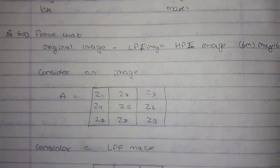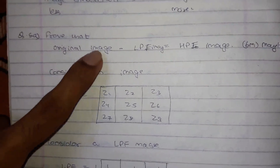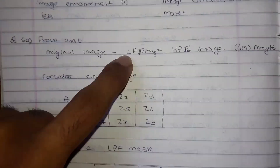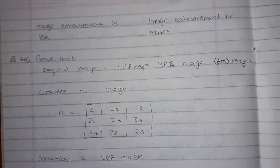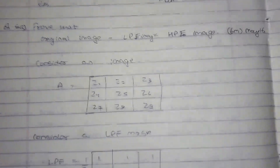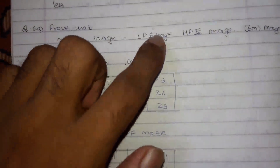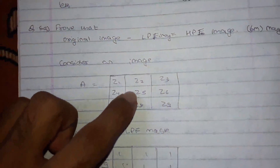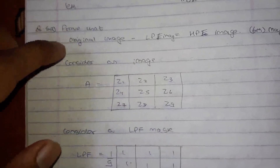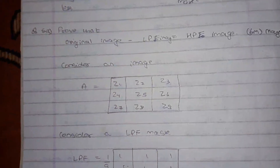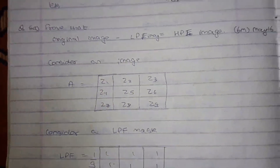Hello guys, in this video I am going to prove that original image minus low pass filtered image is equal to the high pass filtered image. To prove this, if I perform these operations on just one pixel, it is enough to prove that it can be applied to all the pixels and to the whole image.